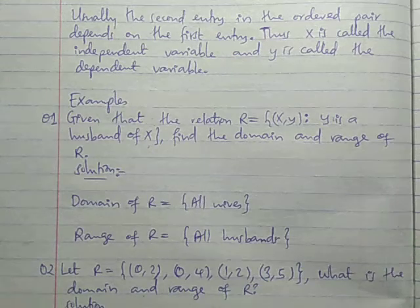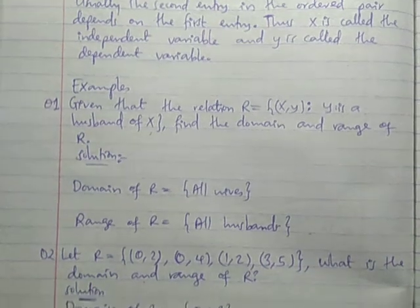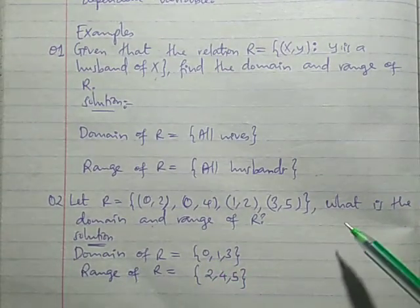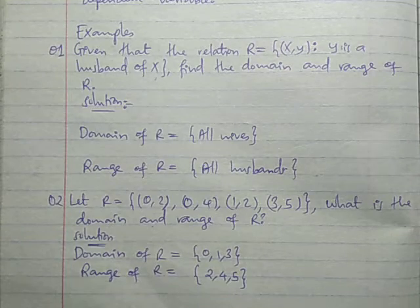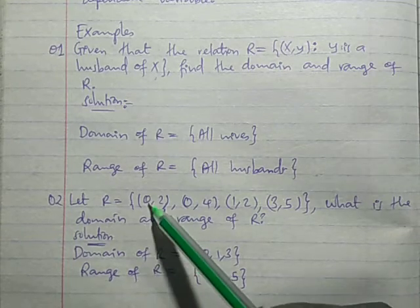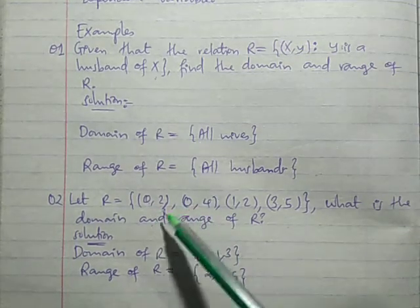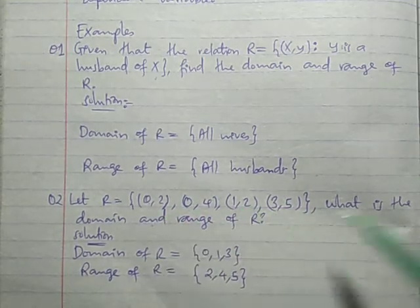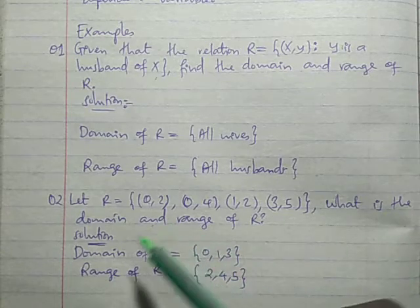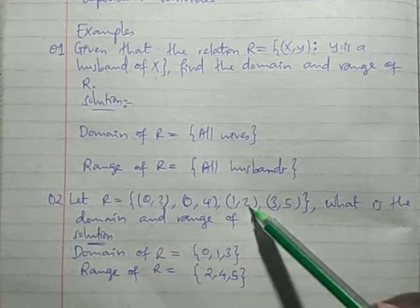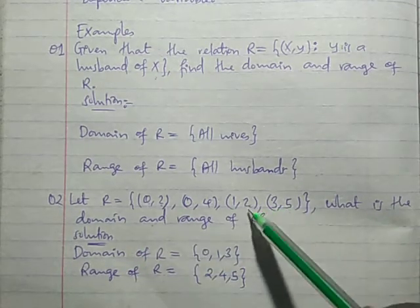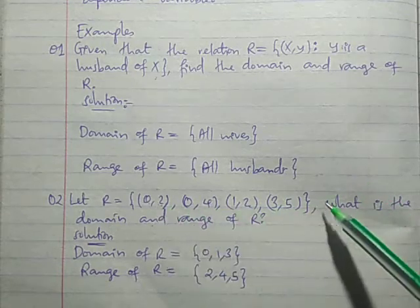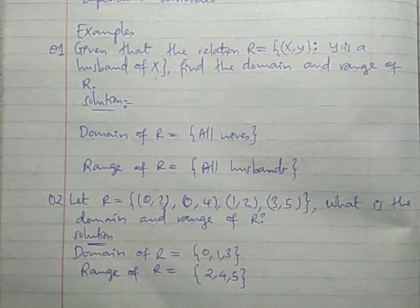And range would be all husbands. For question number two, where we are given ordered pairs, domain itakuwa ni set: {0, 1, 3} — since zero appears twice it's listed once — and range would be {2, 4, 5}. Two appearing twice is listed once.